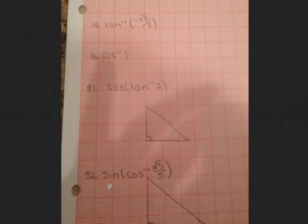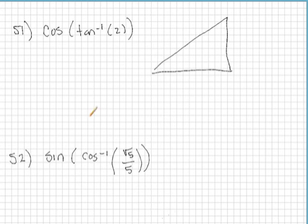51 and 52 are a little bit different, so I'll do those with you here. Let's go ahead and start with 51. We're looking for the cosine of the tangent inverse of 2. I'm going to state that in a different way that maybe makes more sense. What we're actually looking for is the cosine of the angle whose tangent is 2.